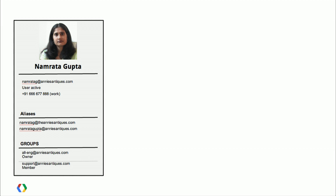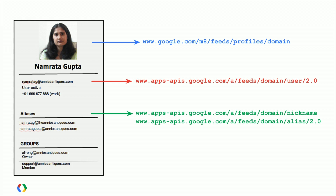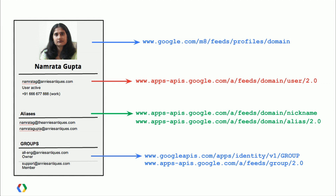Here we have my friend Nimrata — all her information in my test domain. There's a lot of common information here: her phone number, email addresses, which groups she belongs to, her username, and profile photo. The problem is that to get her profile photo I need to call the profiles API, her username requires the provisioning API, nicknames and aliases require yet another call, and then a fourth request to get the groups she belongs to. This is too much.